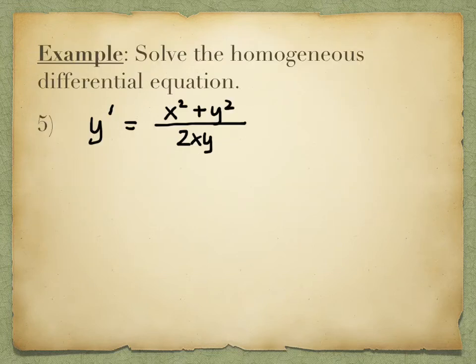Let's do an equation. This has a similar feel to the last example — we have the same problem that we can't separate it. It doesn't have the same ability to put all the x's on one side and all the y's on the other. If I take that 2xy to the other side, I run into problems because I have a plus y² term that isn't multiplied by dy, and I need the function multiplied by dy to take an antiderivative. So this is not separable.